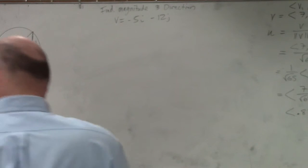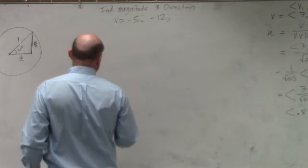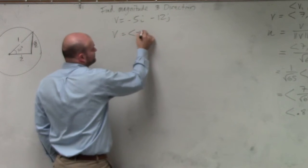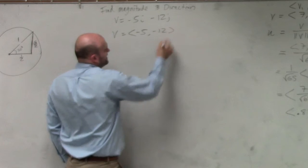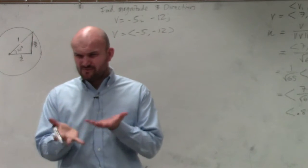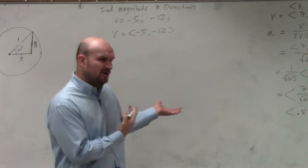So in this example, ladies and gentlemen, to find the magnitude, one of the easiest things I would recommend is just go ahead and write this in component form. Once you get used to linear combination, you're not going to write it in component form. But if that's one of the things you're getting stuck on, just write it in component form.